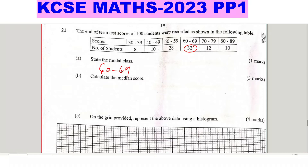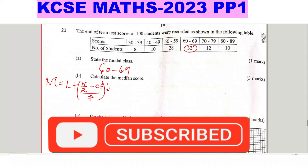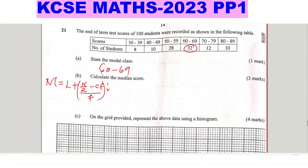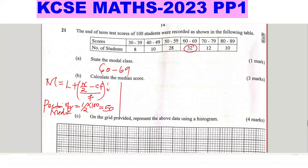Part b: calculate the median score. The median is given by the formula: L plus (n/2 minus cf) divided by f, multiplied by i. That is the formula we use to get the median of grouped data. The first thing you're going to do is get the position of the median. The position of the median is given by half multiplied by total frequency n, which is 100 students, so the position of the median is 50.